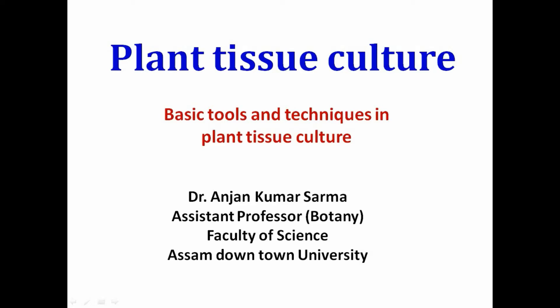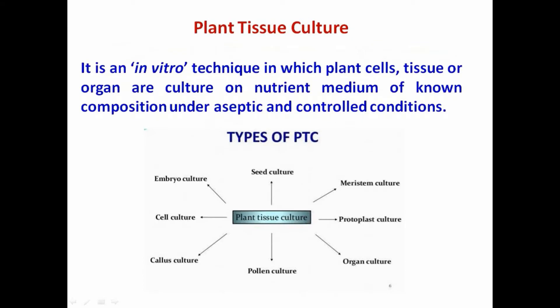Let's discuss the topic: basic tools and techniques used in plant tissue culture. Plant tissue culture is an in vitro technique in which plant cells, tissue, or organs are cultured on a nutrient medium of known composition under aseptic and controlled conditions. Different types of plant tissue culture include seed culture and meristem culture.